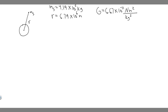In this problem, we're told the International Space Station has a mass of 4.19 times 10 to the 5 kilograms and orbits at a radius of 6.79 times 10 to the 6 meters from the center of the Earth. Find A, the gravitational force exerted by the Earth on the space station; B, the space station's gravitational potential energy; and C, the weight of an 80-kilogram astronaut living inside the station.